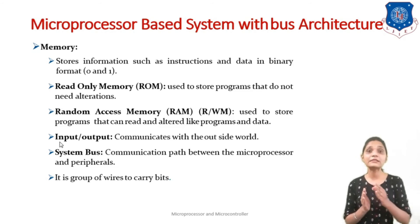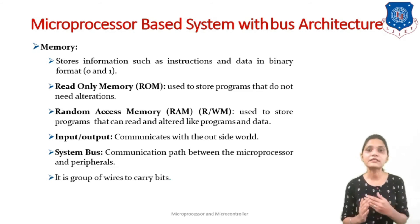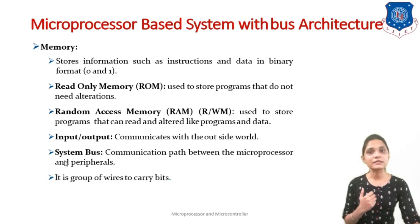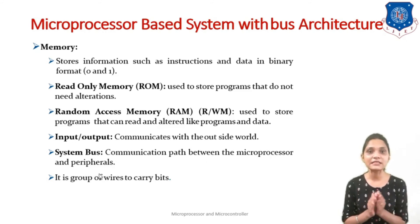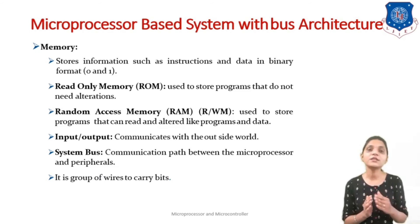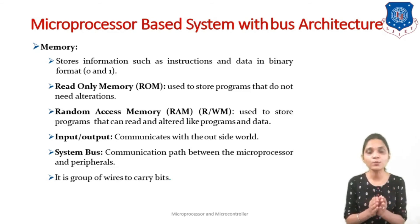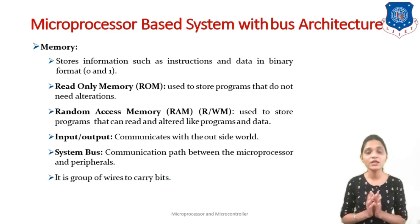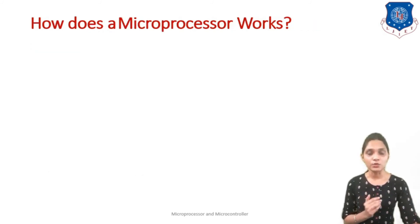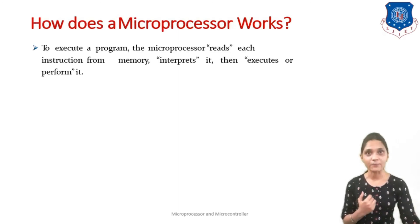Input/output devices provide communication with the external world. Input devices include keyboard and mouse; output devices include monitor and printer. The system bus provides the path between the microprocessor and peripherals. It is basically a group of wires that carry bits — in any digital system, bits are transmitted in groups, not singly. The group of wires carrying these grouped bits is the system bus, essentially a communication path between the microprocessor and other peripheral devices.